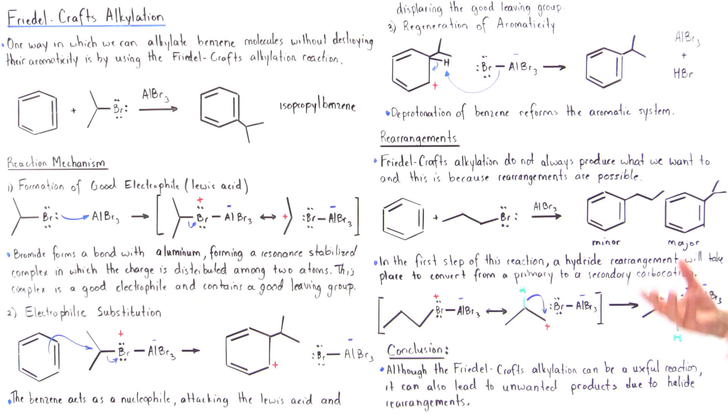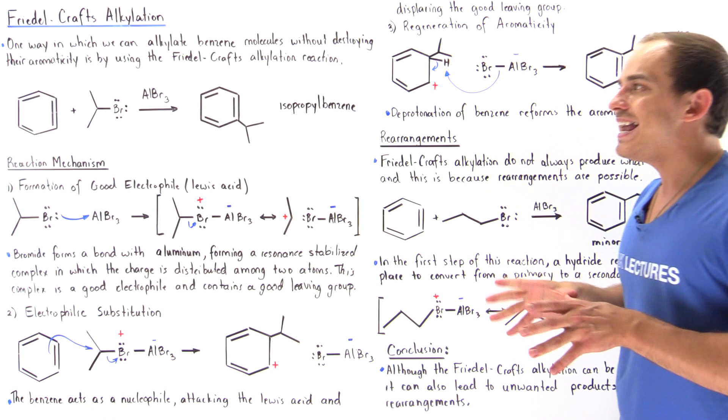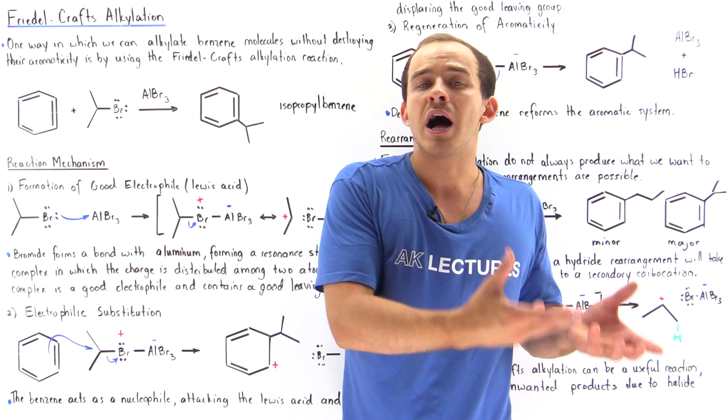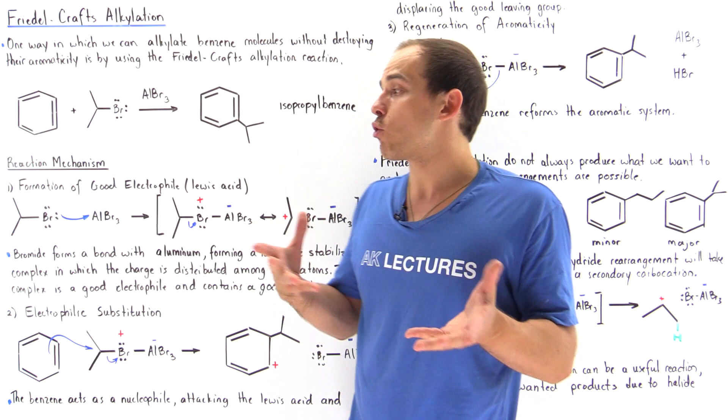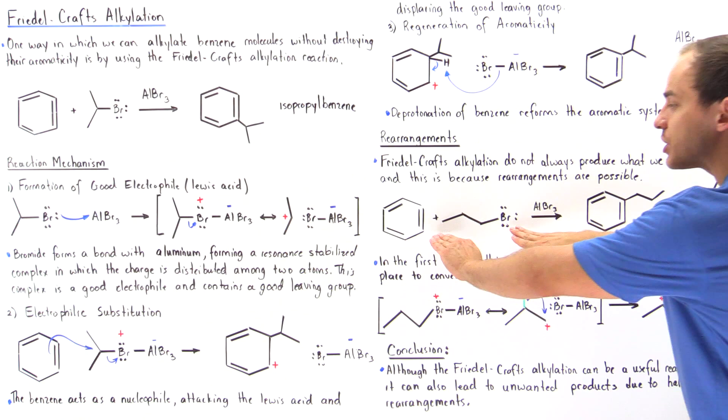One important conclusion about the Friedel-Crafts alkylation reaction is that, although it is a very useful way to alkylate benzene molecules, it is limited in the sense that rearrangements can sometimes take place. When rearrangements occur, unwanted products can form. For example, if we wanted to form only the propyl benzene product and used propyl bromide as the reactant, the isopropyl benzene would actually be the major product — which is a problem if we need that specific product.